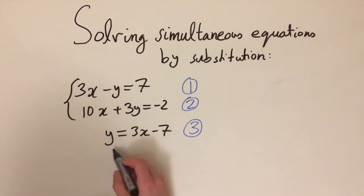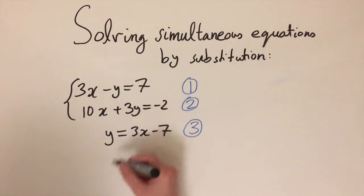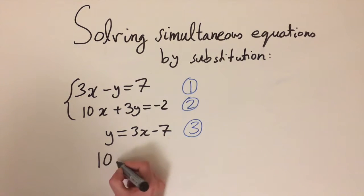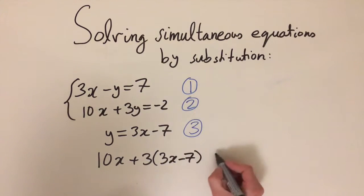Now we're going to substitute y equals 3x minus 7 into equation 2, and this is going to get rid of the variable y. If we do this we get 10x plus 3y, and y is 3x minus 7, and this equals minus 2.